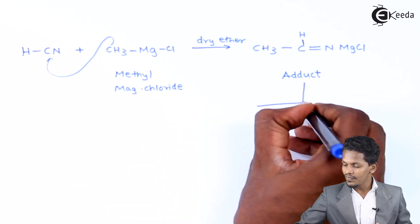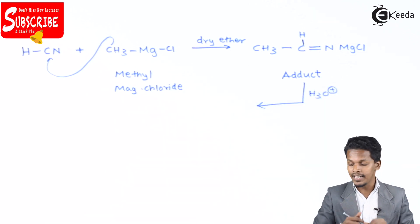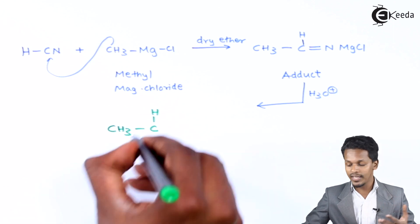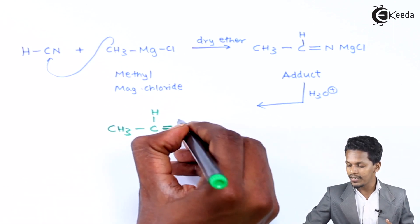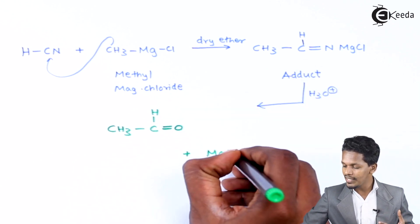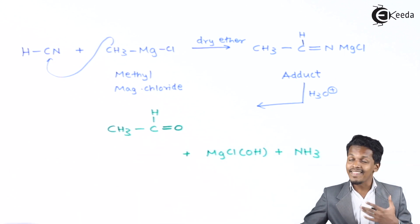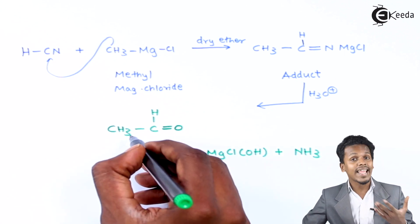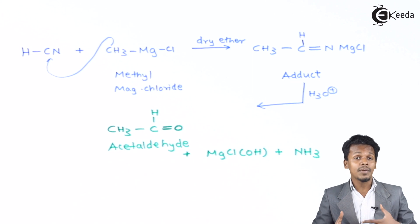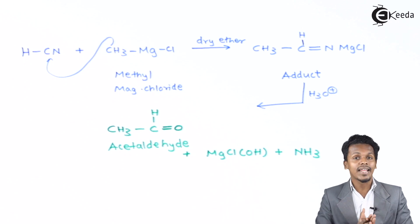This reaction further undergoes acid hydrolysis in the presence of H₃O⁺, and we obtain an aldehyde: CH₃–CH=O, with byproducts MgCl(OH) and NH₃. This is the main product — an aldehyde — and its name is acetaldehyde. This is how we can prepare not only acetaldehyde but any aldehyde, as long as we use hydrogen cyanide reacting with a Grignard reagent.